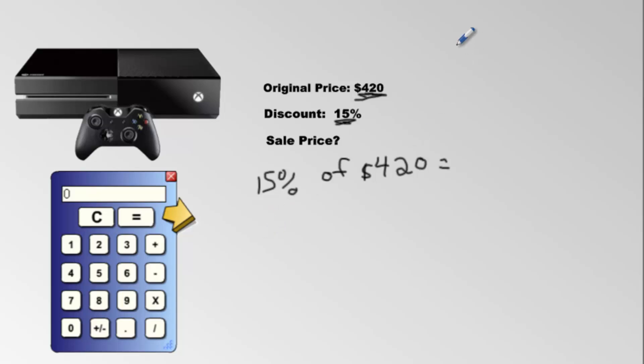Now, 15% is 15 over 100, which is decimal 0.15. You always need to convert it to a decimal format. We multiply because of means multiply, and we multiply by 420. We'll whip out our calculator. We'll write 0.15, multiply that by 420, and that gets us 63.